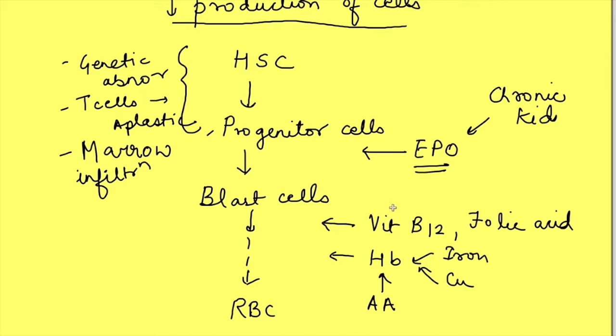That is they will have normal size. So they will be normocytic and they will have normal concentration of hemoglobin in them. That is they will be normochromic. But since total number will be less, anemia will occur. So these are essentially normocytic, normochromic, hypoproliferative anemia.